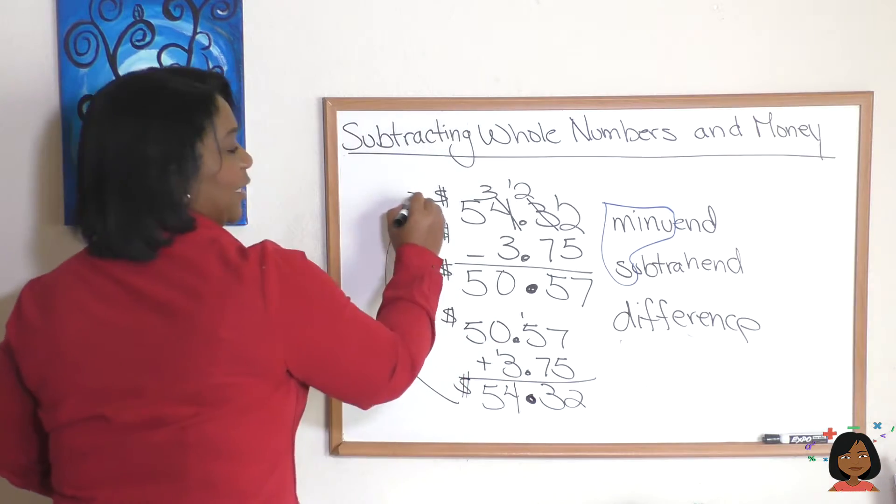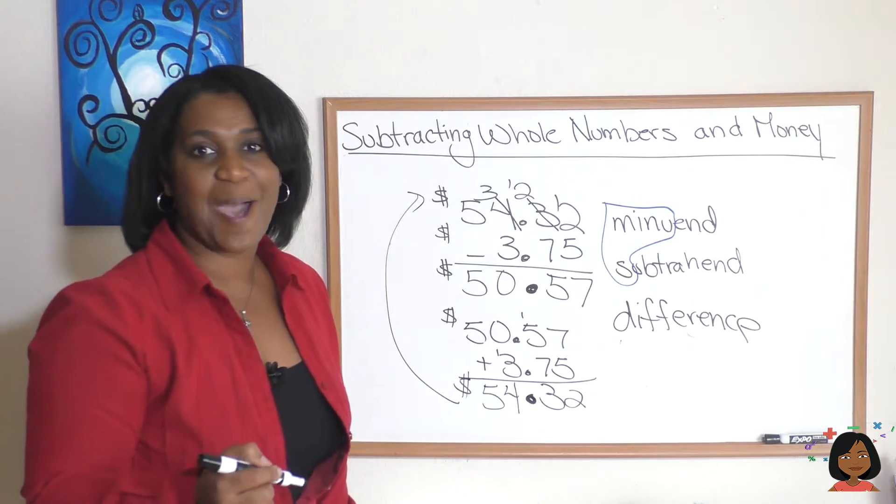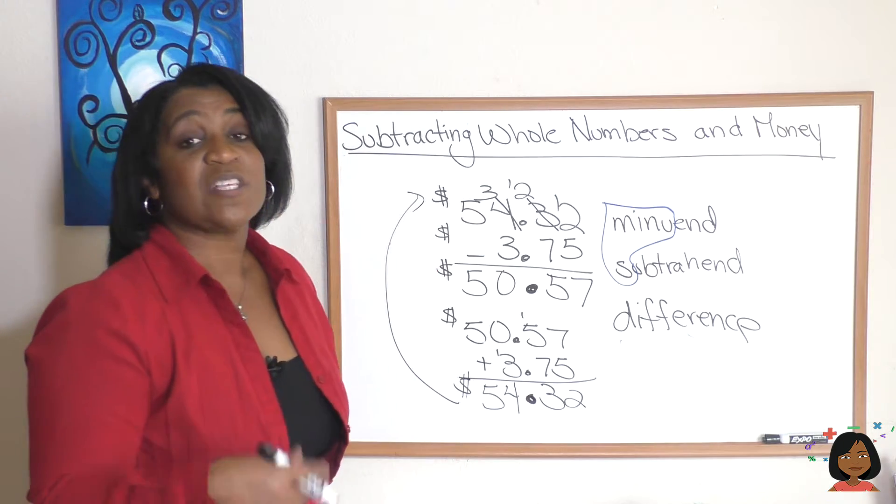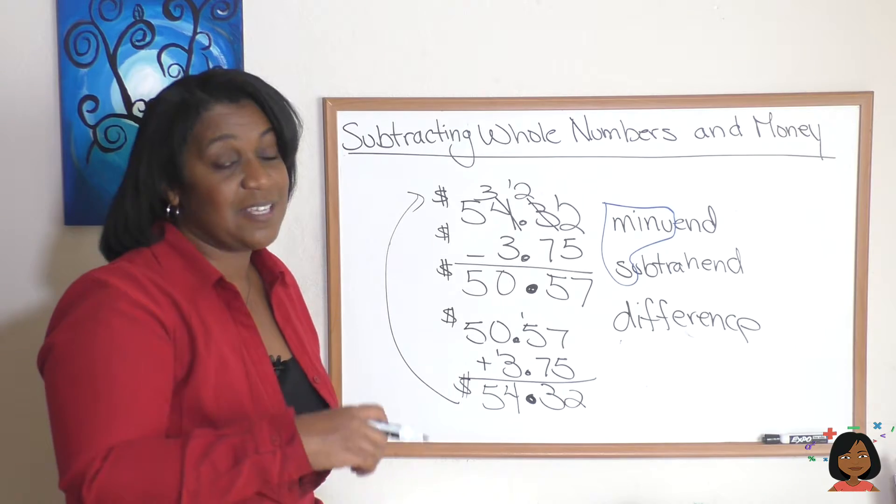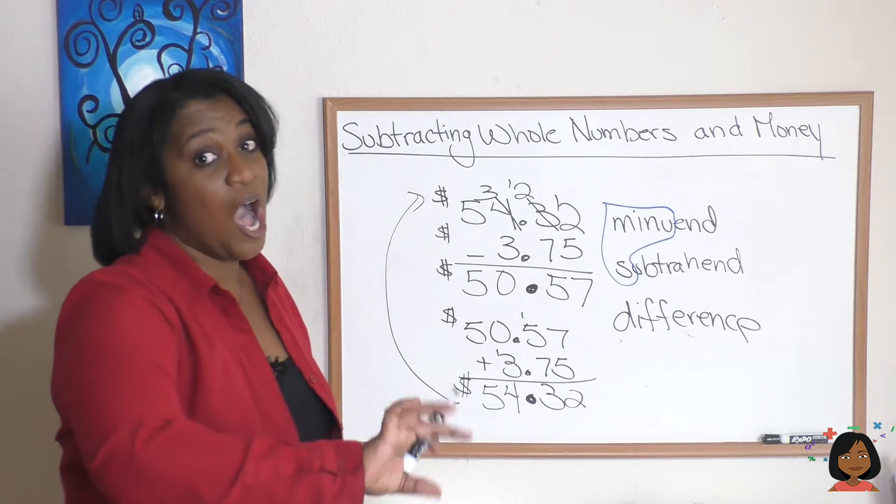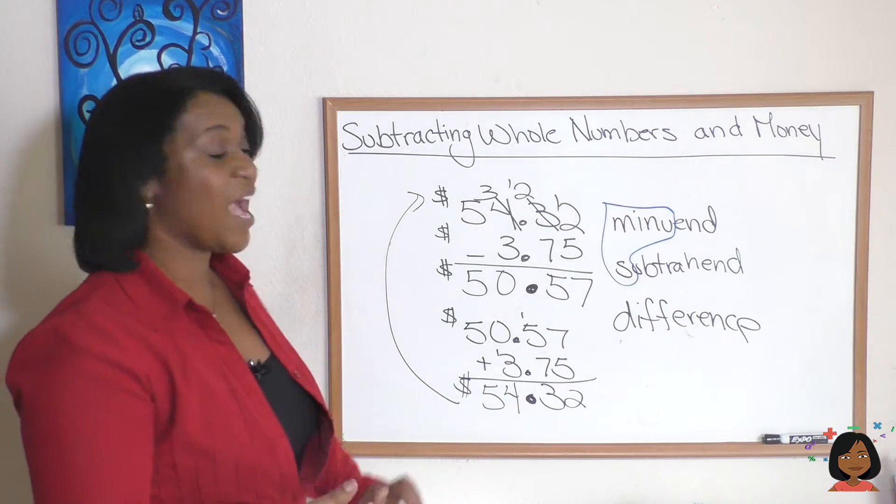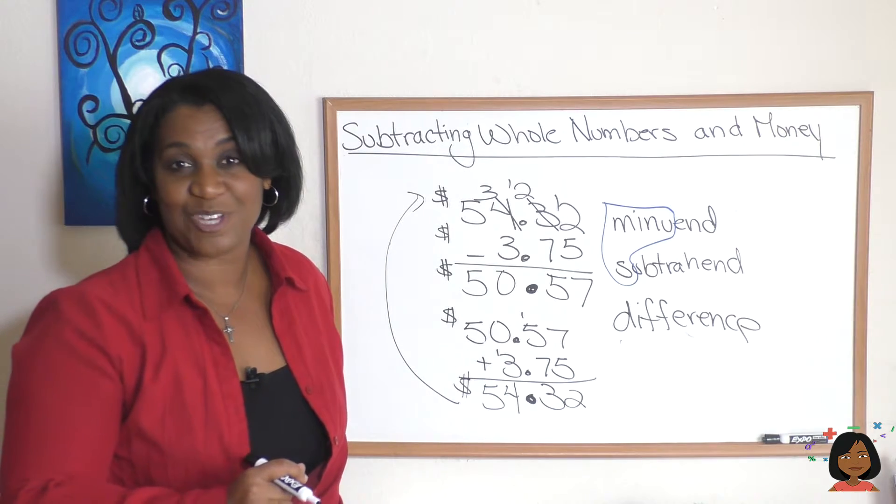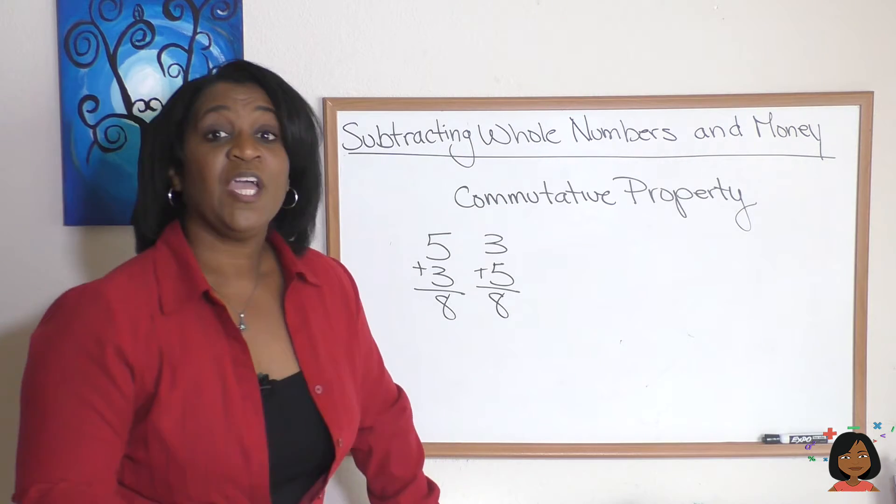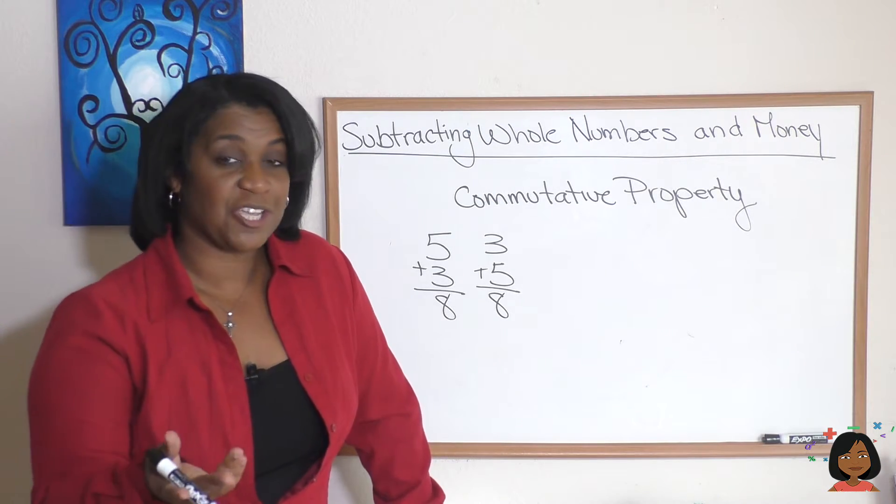And looky looky it adds back up. So what we say is that subtraction undoes addition and addition undoes subtraction, and that's how we have our built-in answer checker. You might remember that for addition I talked to you about the commutative property of addition which tells us that it doesn't matter which order we add the addends in, we'll still get the same sum.